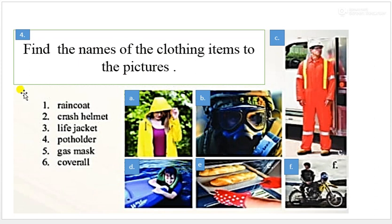Find the names of the clothing items in the pictures. First one, green coat, picture A, you can see it. Second, crash helmet, crash helmet. You can see it, that picture. Number three, life jacket, picture D you can see. This boy wearing a life jacket. Number four, pot holder, picture E, baking some cookies. During the time you can wear a pot holder because it's hot.